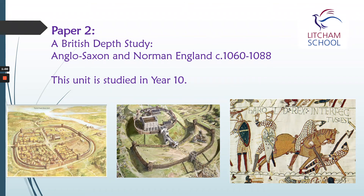The second unit that we study for Paper 2, also in Year 10, is the British Depth Study — Anglo-Saxon and Norman England. We look at life in Anglo-Saxon England before the Norman invasion, the battles of 1066, and how the Normans were able to invade England. We then look at how the Normans conquered England, the changes they made, and the huge impact they had on this country, which shapes the way we live today. Those two units — the American West and Anglo-Saxon and Norman England — together form Paper 2, both studied in Year 10.